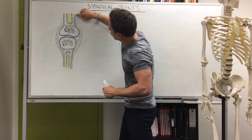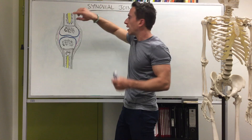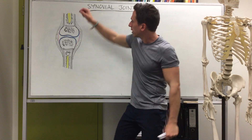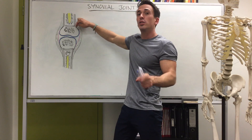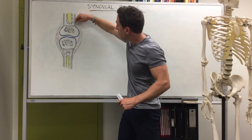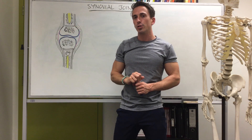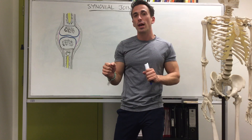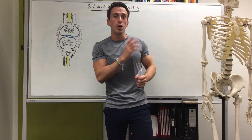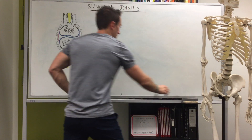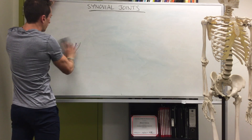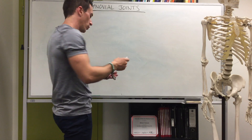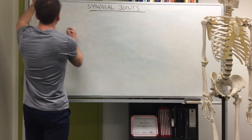You can also see the periosteum, which is the outer aspect of the bone and runs along the outside of all bones. However, where there is articular cartilage, there is no longer any periosteum — it transitions into articular cartilage instead. Now let's talk about the different subtypes of synovial joints, how freely movable they are, and where you can find them in the body.